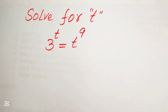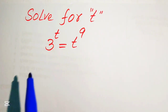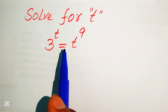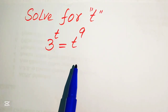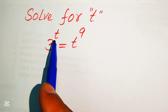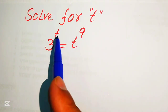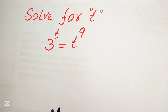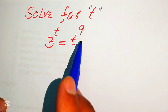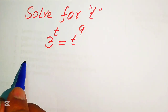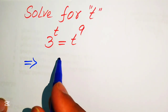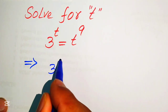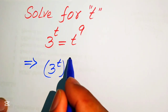In this method, first we need to move our variable terms to the right-hand side and the constant terms to the left-hand side. To move t to the right-hand side, we need to take the t-th root — that is, the 1-over-t power — on both sides of this equation.